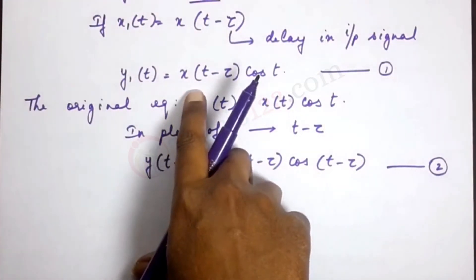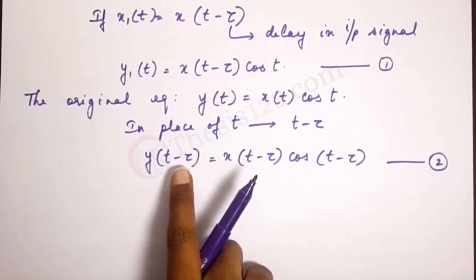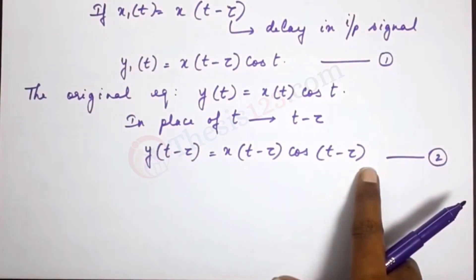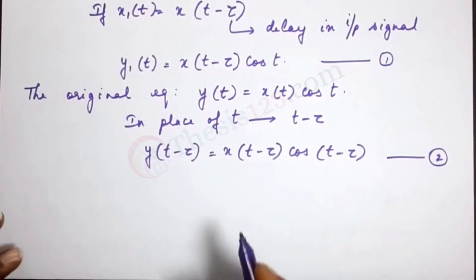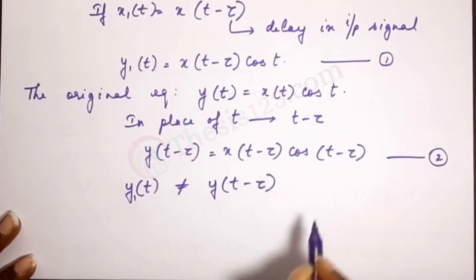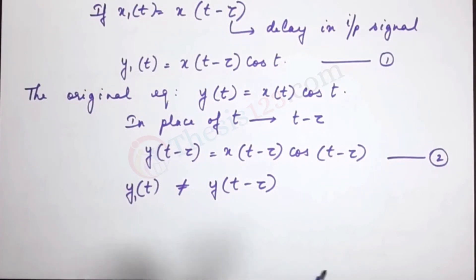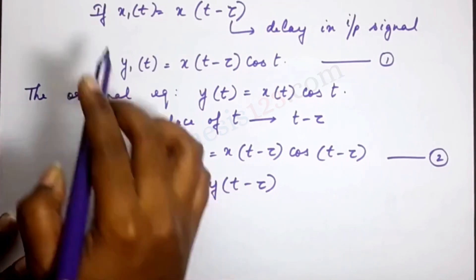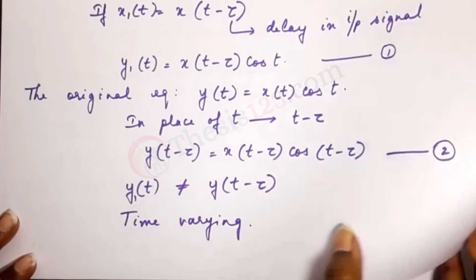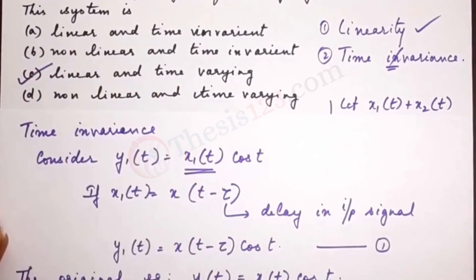Now observe: equation 1 gives x(t − τ)·cos(t), while equation 2 gives x(t − τ)·cos(t − τ). They are not the same. y1(t) ≠ y(t − τ), because in equation 1 the delay is applied only to the input signal, whereas in equation 2 it applies to the entire equation. This means the system is time varying. Time invariance requires both to be equal, so this is a time varying system — option C: linear and time varying.